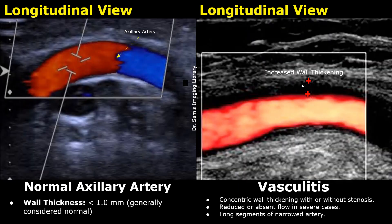Vasculitis refers to inflammation of the blood vessel. It can occur in conditions such as Takayasu's arteritis or giant cell arteritis. Normally the intimal wall thickness is less than 1 mm approximately. On ultrasound, there is increased wall thickening with or without stenosis. This thick hypoechoic area is the increased wall thickening — it is slightly brighter than the lumen. The lumen is anechoic, so you will be able to see this thickening. Using color or power Doppler makes it easier to visualize these thickened walls. This thickening is often concentric and involves long segments of the artery.